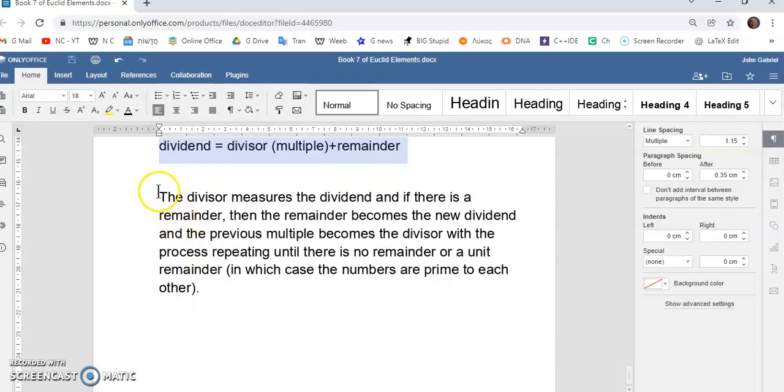And, of course, to summarize, the divisor measures the dividend. And if there is a remainder, the remainder becomes a new dividend. And the previous multiple becomes a divisor with the process repeating until there is no remainder or unit remainder. In which case, the numbers are prime to each other. And that, my friends, is the famous Proposition 1 of Book 7.